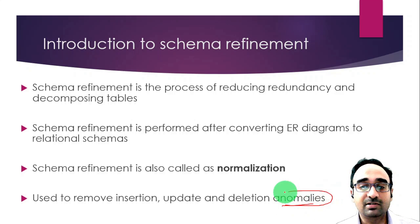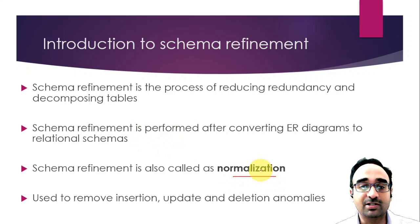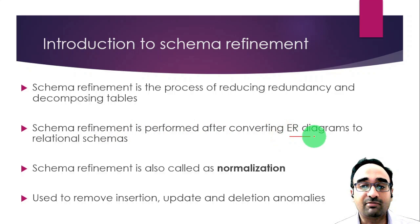In the coming few minutes I will show you an example of a table and explain all three types of anomalies. Normalization or schema refinement is performed after converting ER diagrams to relational schemas. Once you get the relational schemas, then you perform normalization.